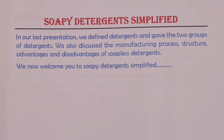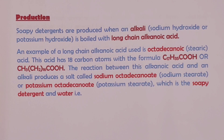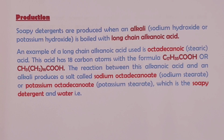We begin with the production process. Soapy detergents are produced when an alkali — either sodium hydroxide or potassium hydroxide — is boiled with a long-chain alkanoic acid. The example of an alkanoic acid we want to use here is one that has 18 carbons. This alkanoic acid is called octadecanoic acid, or it is commonly called stearic acid.